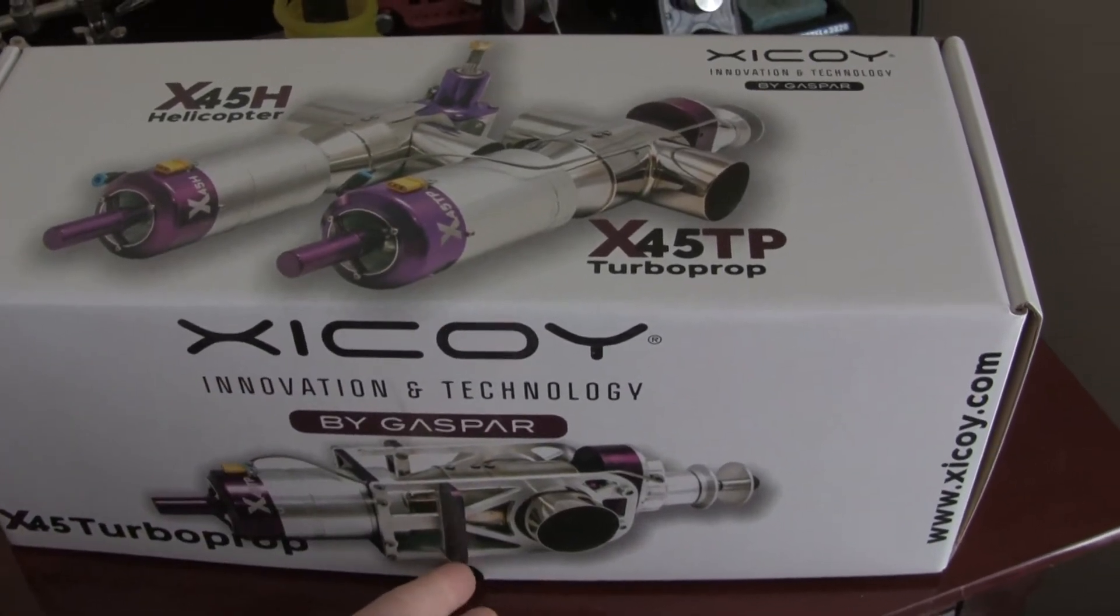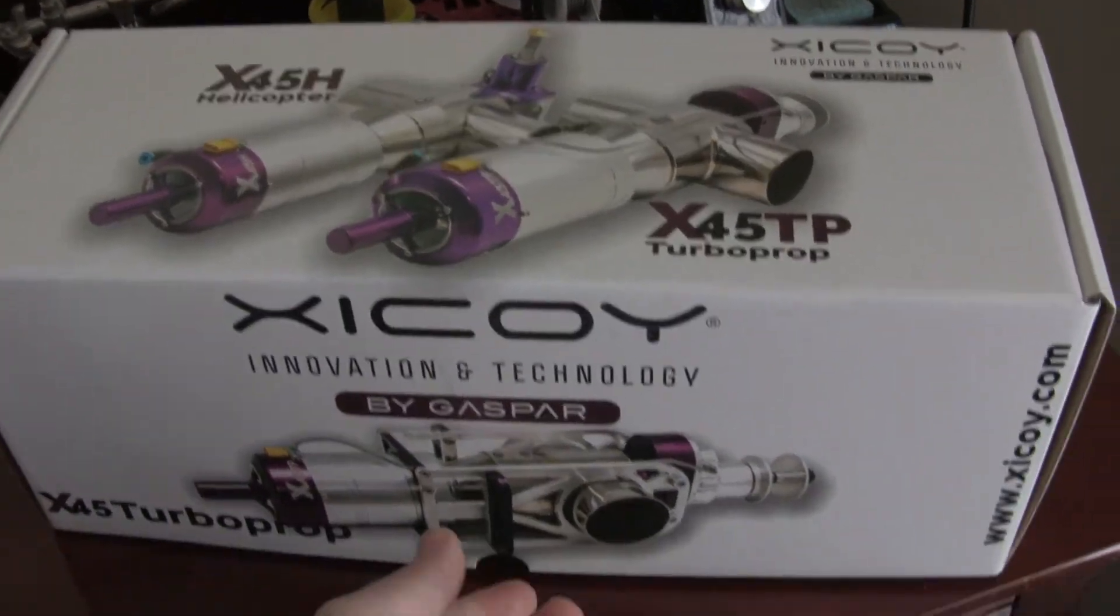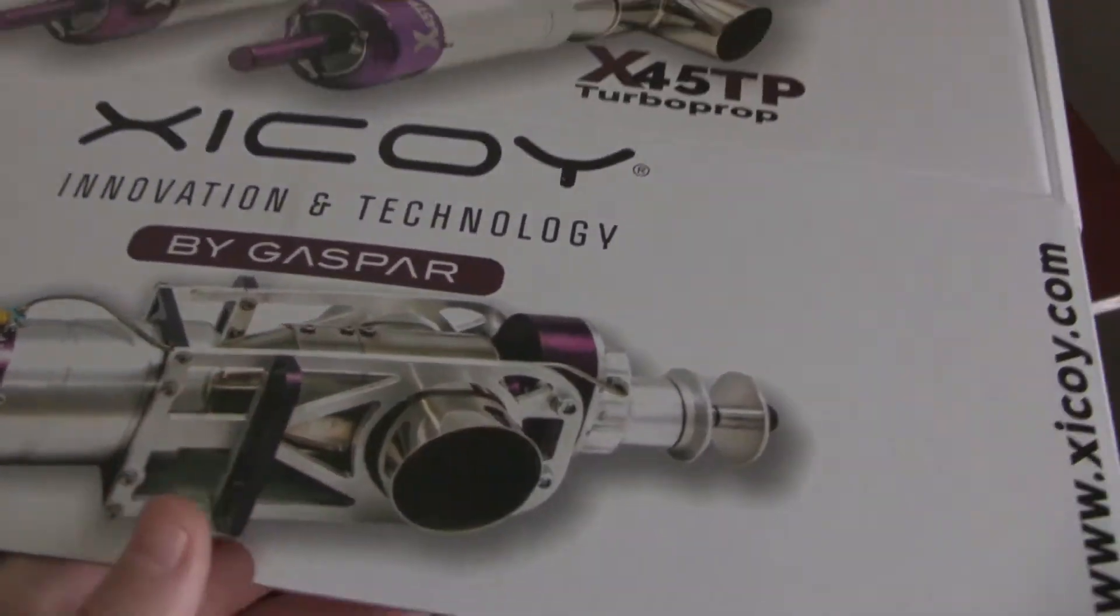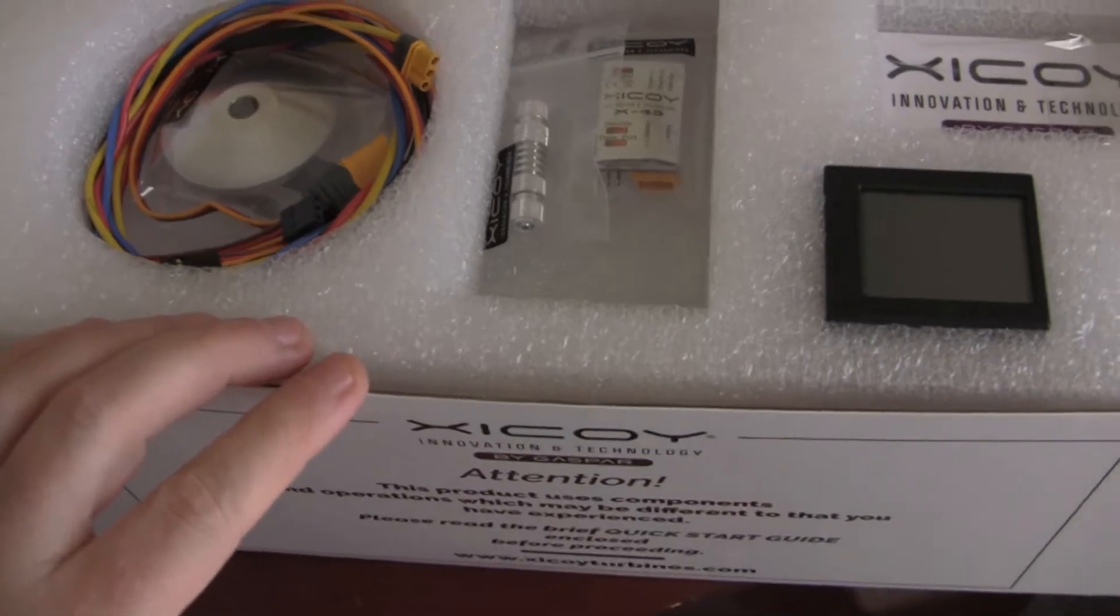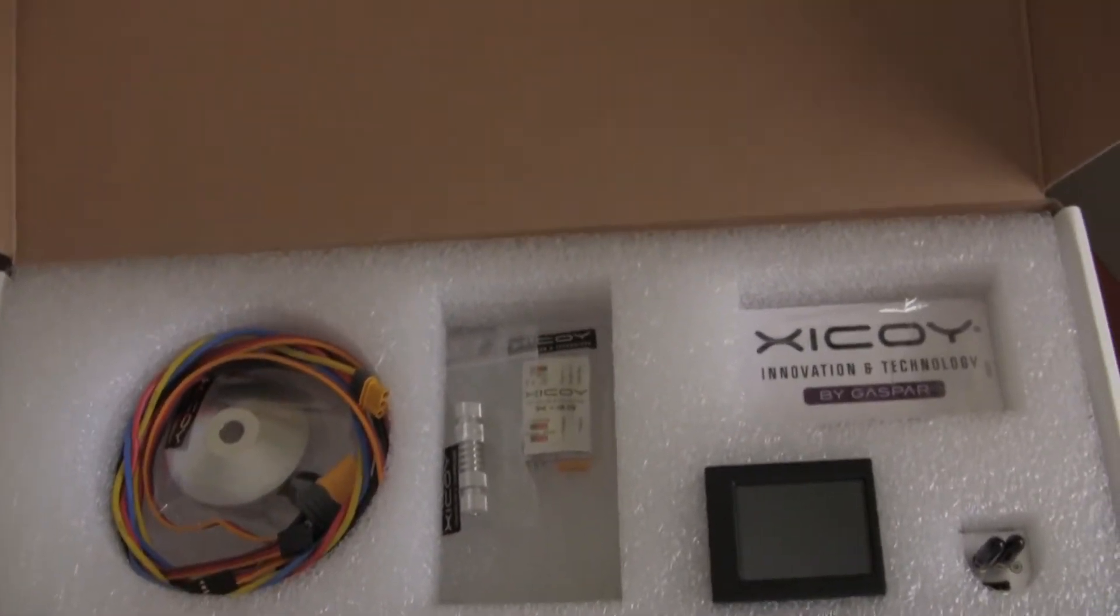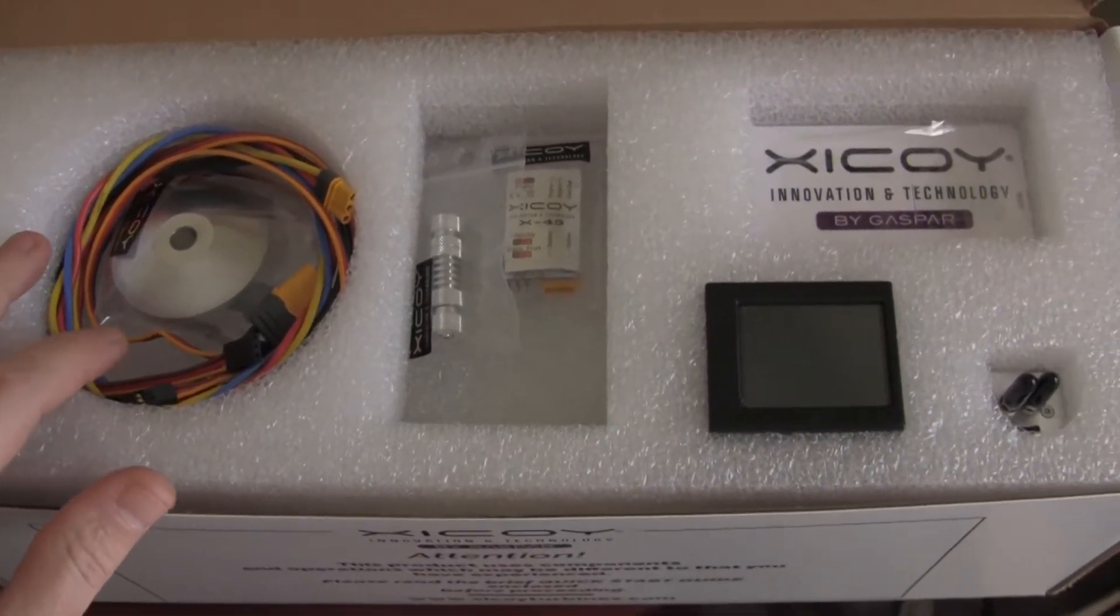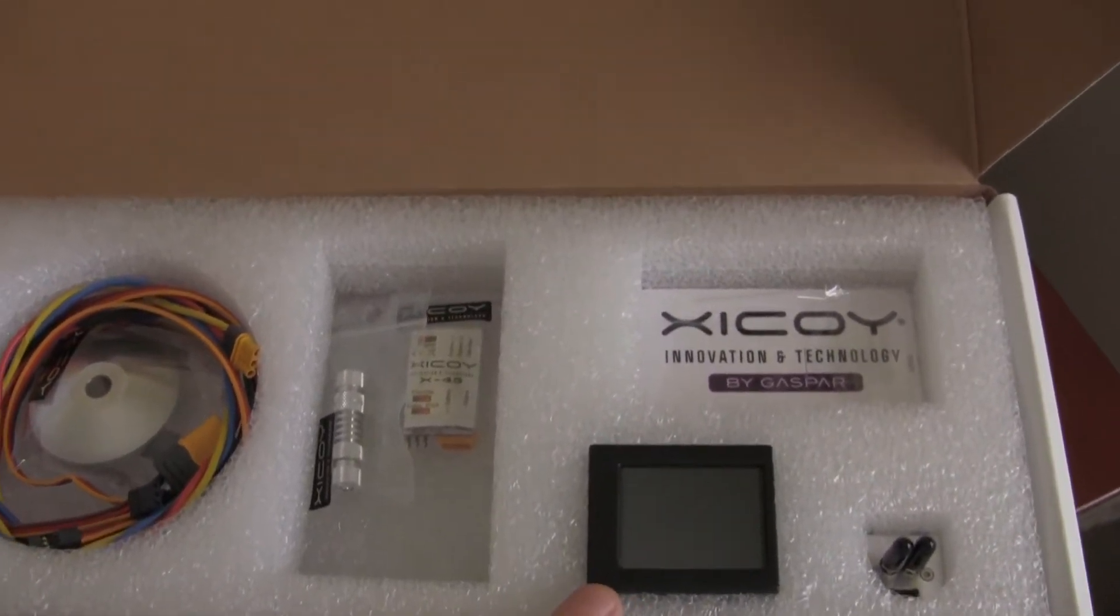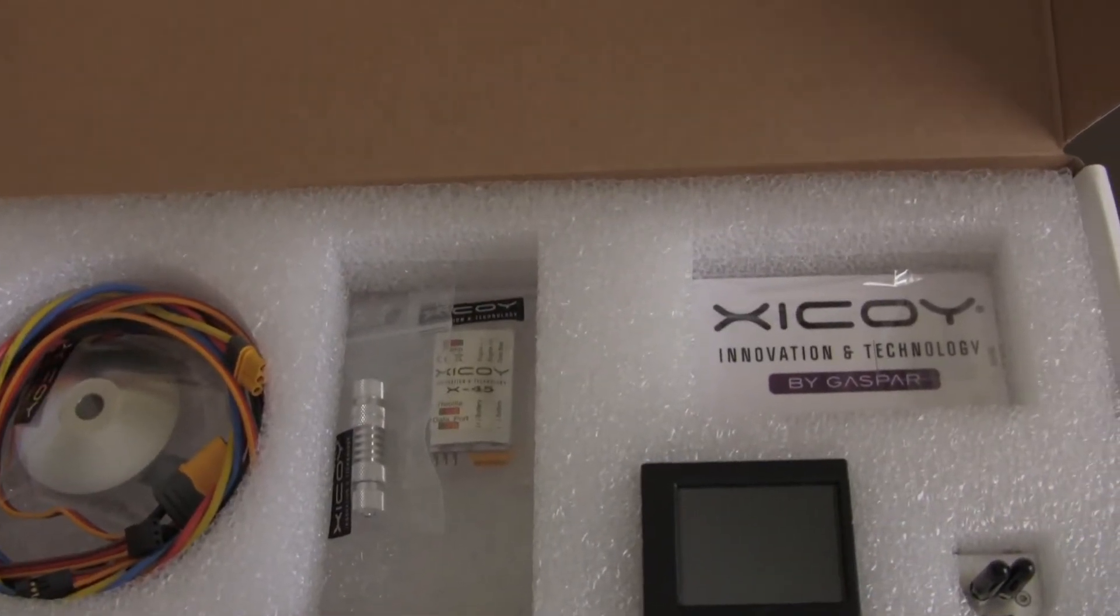So the X45TP, this is the first one I've gotten in. I think it's the first one here in the US. I wanted to get serial numbers anyway, so I wanted to show you guys what's in the box. It's a larger box than the normal 45 obviously, the same box that the heli comes in, but there are a little bit of different differences. This is the light version.